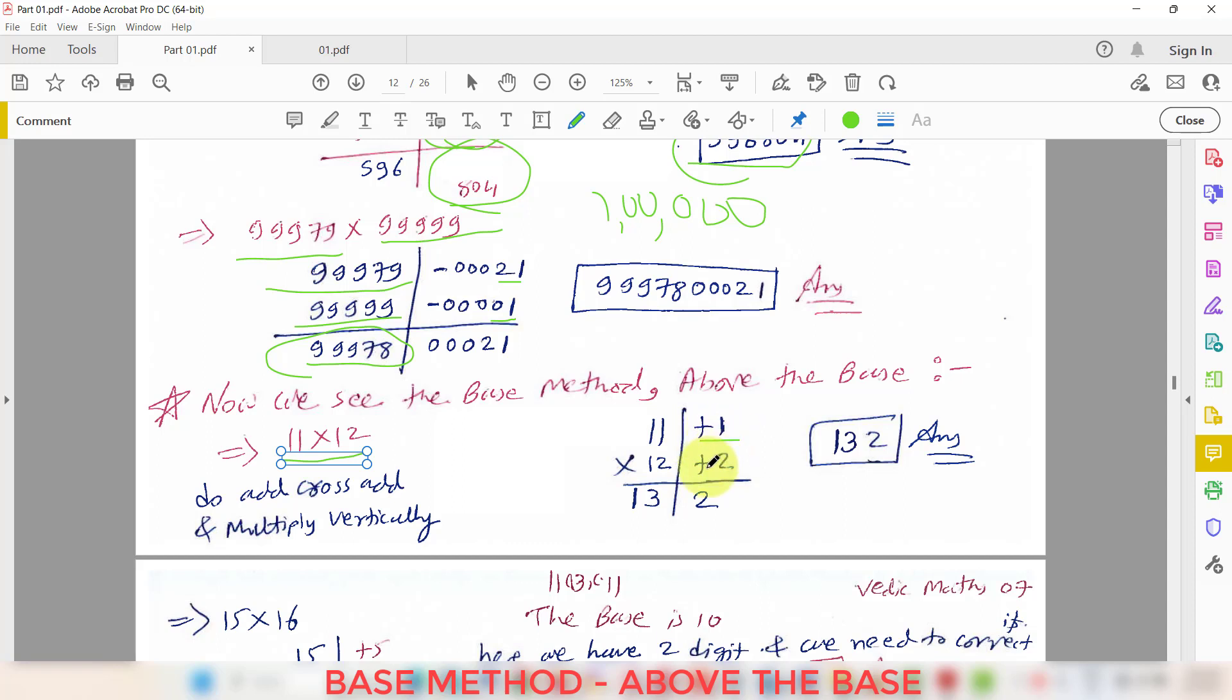So 11 times 12. So 11 will be excess of 1 than the 10 and 12 will be excess of 2 than the 10. And then after 11 plus 2 that is 13 or 12 plus 1 that is also 13 and then after 1 into 2 that is 2. So same technique we are using, 132.